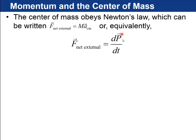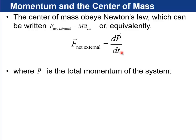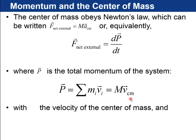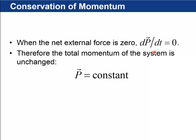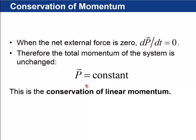So the center of mass obeys Newton's law, which can be written as f equals ma, or equivalently f net is dp by dt, where P, capital P now, is the total momentum of the system. That's going to be the sum of the momenta of all the particles of the system. So here's the index, and you're summing over the momentum of every single particle. That's going to be equal to the total mass of the system times the velocity of the center of mass. And the acceleration of the center of mass is going to be dv by dt. So when the net external force on the system is zero, then the time derivative of the total momentum equals zero. So that means that the total momentum of the system is constant if there's no external forces. And that's going to be pretty useful for us. That's called conservation of linear momentum.